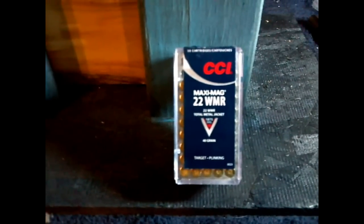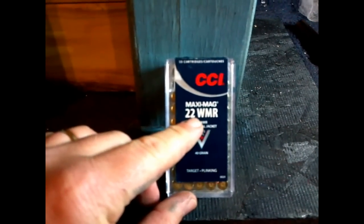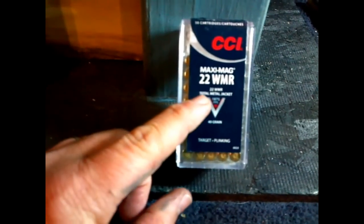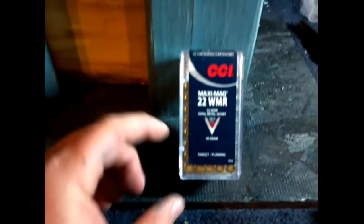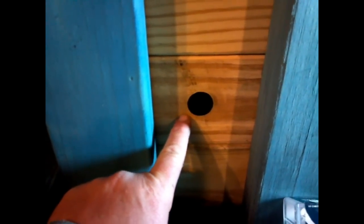Po'boy Special here. We got a hold of some CCI Maxi Mag, that's 22 Magnum WMRs, and this is a total metal jacket, 40 grains. We're going to see if it'll go through a 2x4, shot from a 6-inch barrel from about 5 feet away. Let's check it out and see what it does.